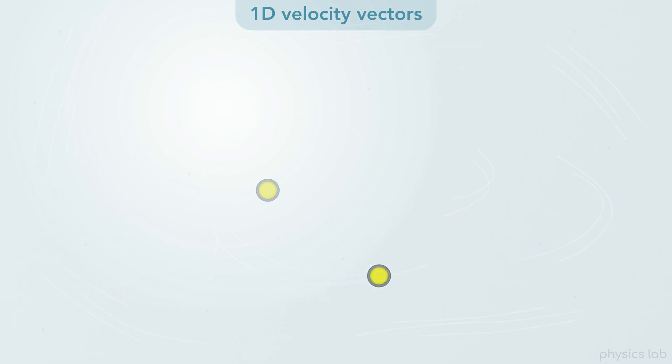For example, if this stone is moving at 2 meters per second, and this one is moving at 4 meters per second, we draw a longer velocity vector to represent a greater velocity. If the velocity is double, then the vector would be twice as long.